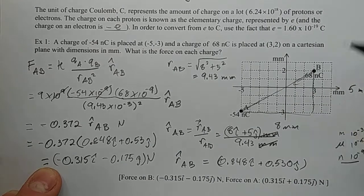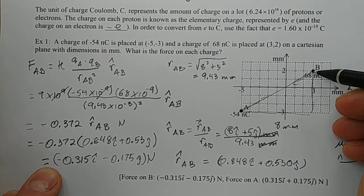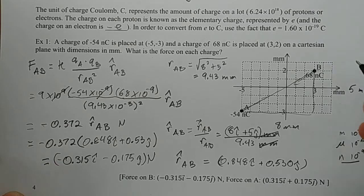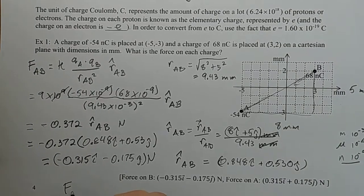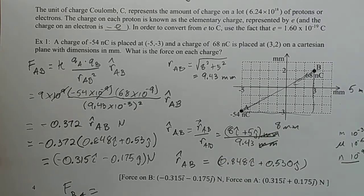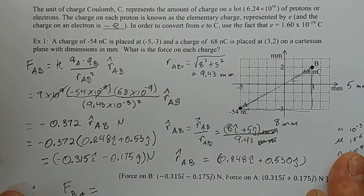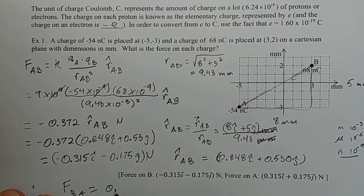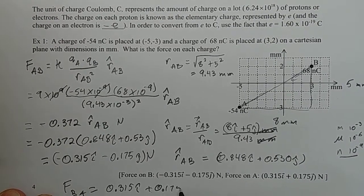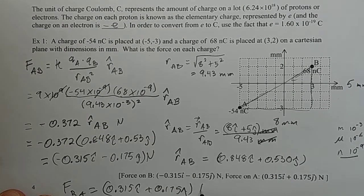Does that make sense? This is the force of A on B. So what is A doing to B? A is pulling B backwards and down. It's pulling it this way. And what can we say about the force of B on A? It's just going to be the opposite of that because of the third law of motion. They both feel the same amount of force but in opposite directions. So it's going to be 0.315 i hat plus 0.175 j hat newtons.